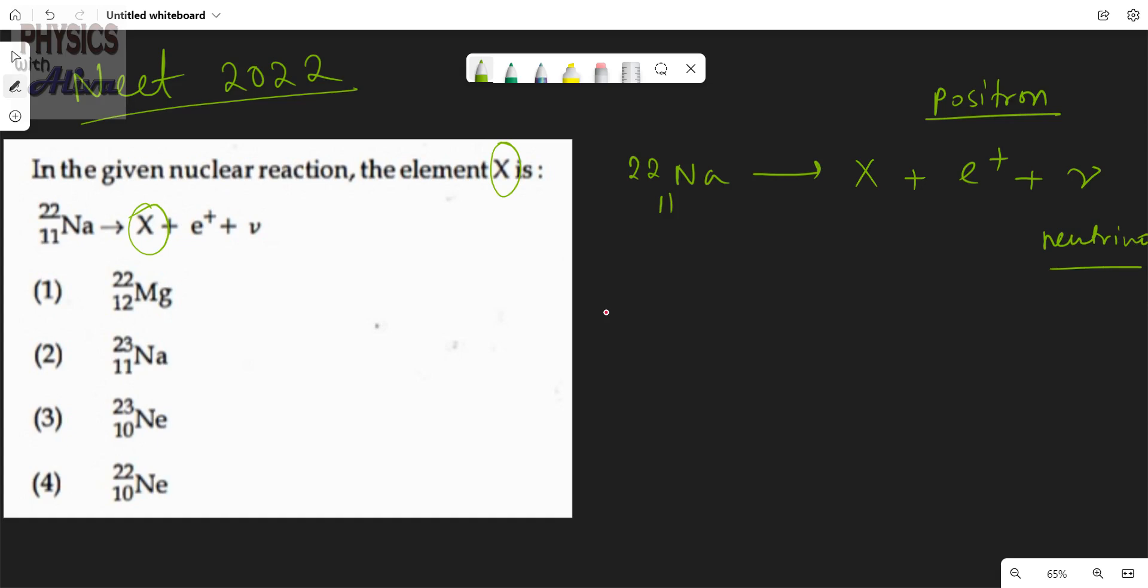This is beta plus decay. The equation name is beta plus decay. So we can write the equation like this: 22 over 11 Na goes to X, e plus means we will get plus 1 here and this is 0.